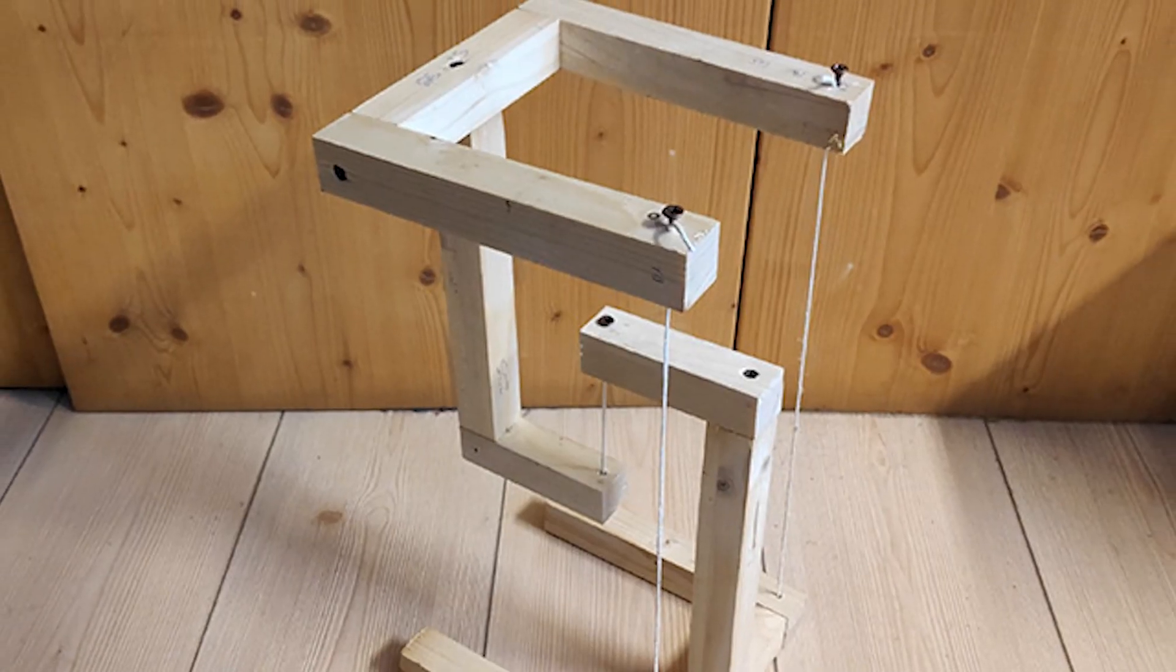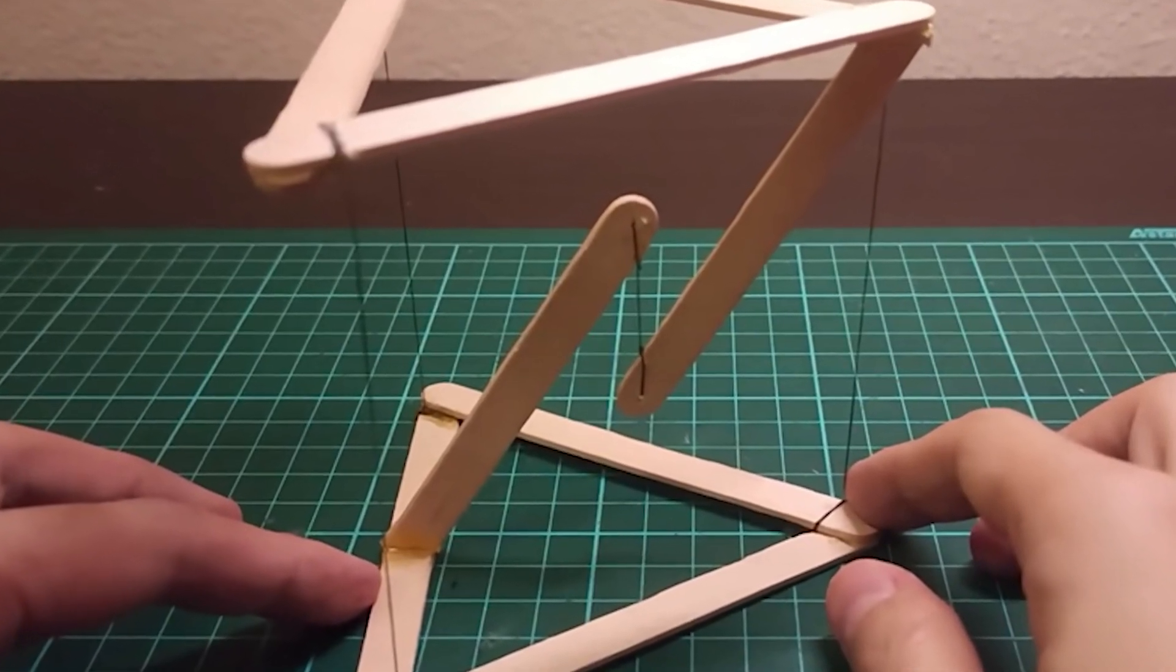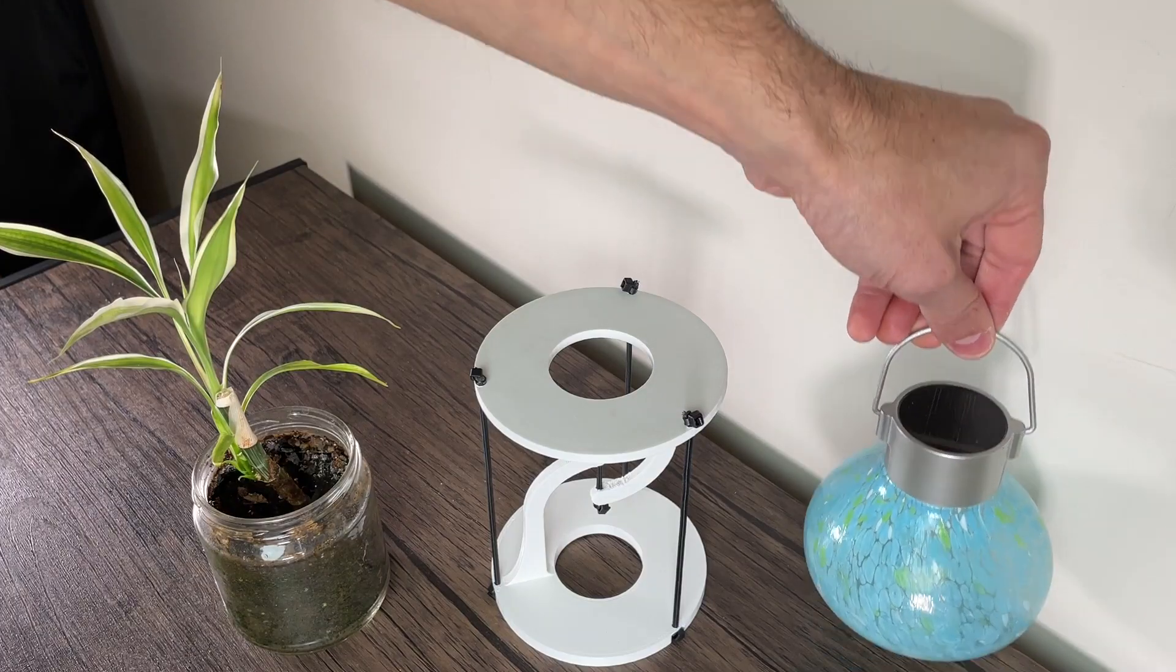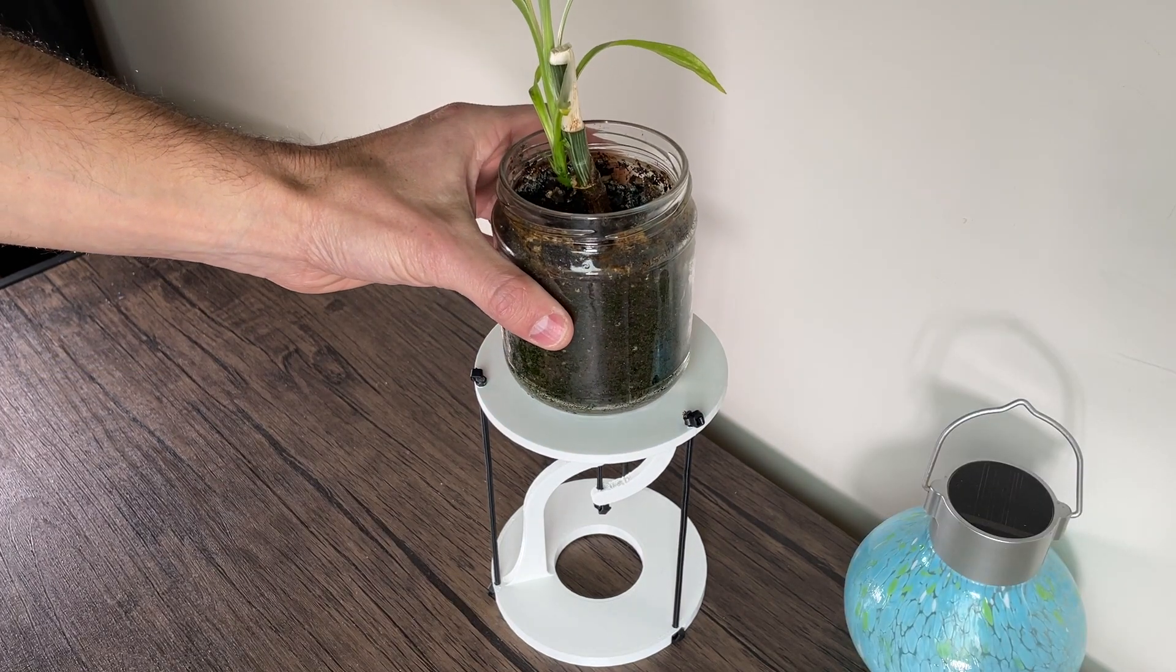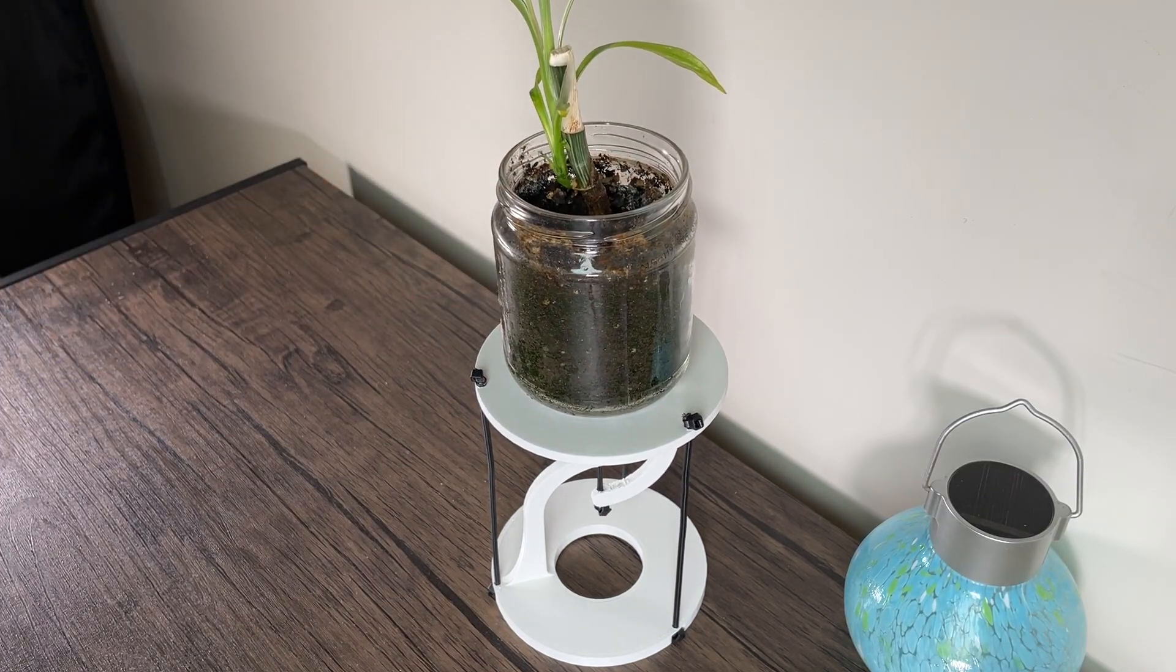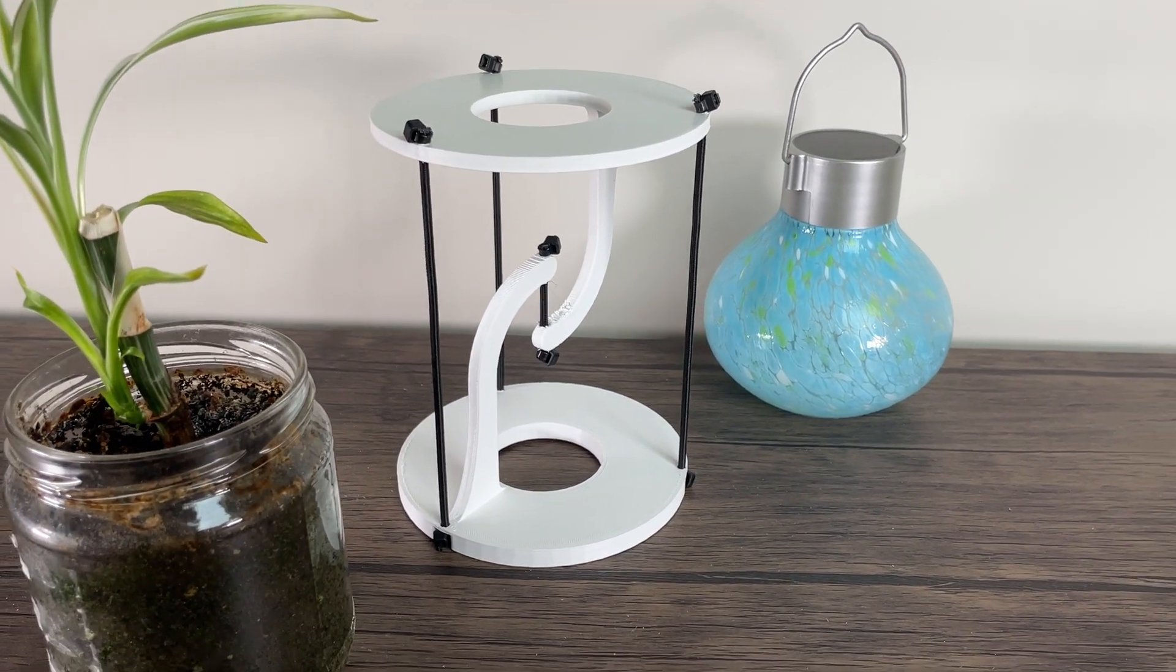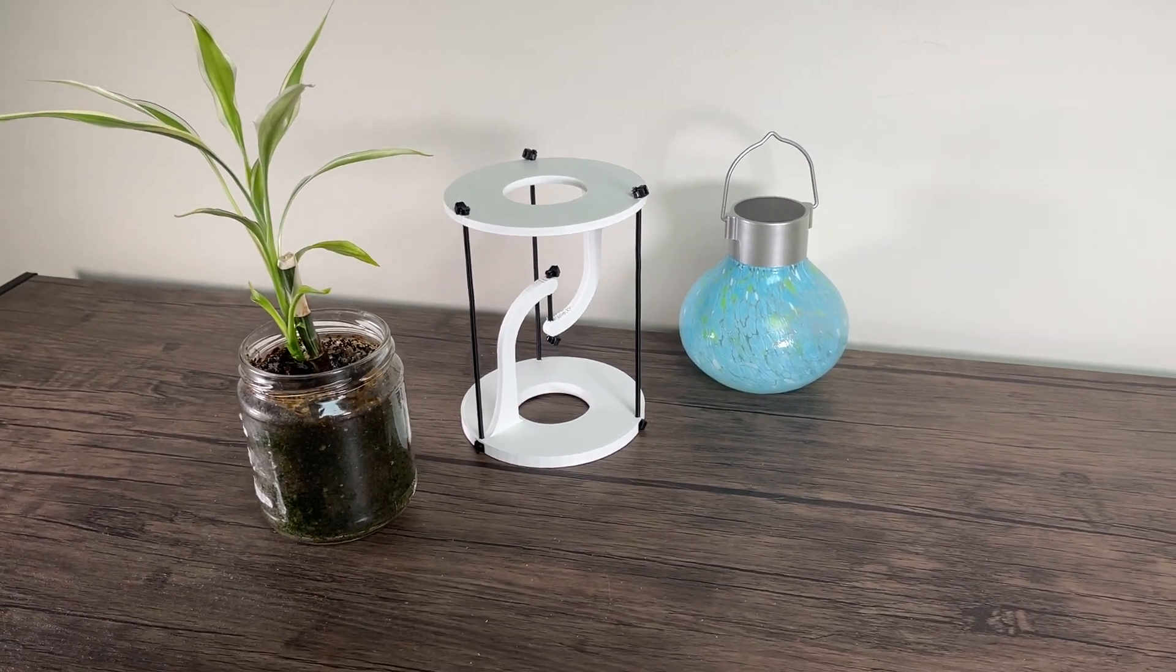For those of you wondering what a tensegrity is, essentially it's a structure that relies on tension rather than compression for its structural integrity. The unique design of a tensegrity structure can give a floating illusion that surprisingly can hold more weight than you might expect. Many basic tensegrity structures have two solid components linked together with flexible components such as cords, chains, or rope.